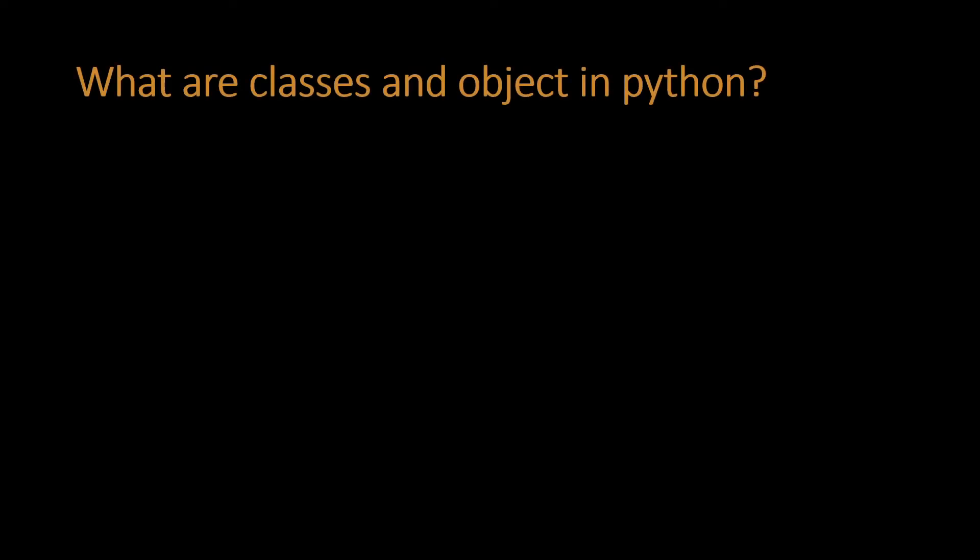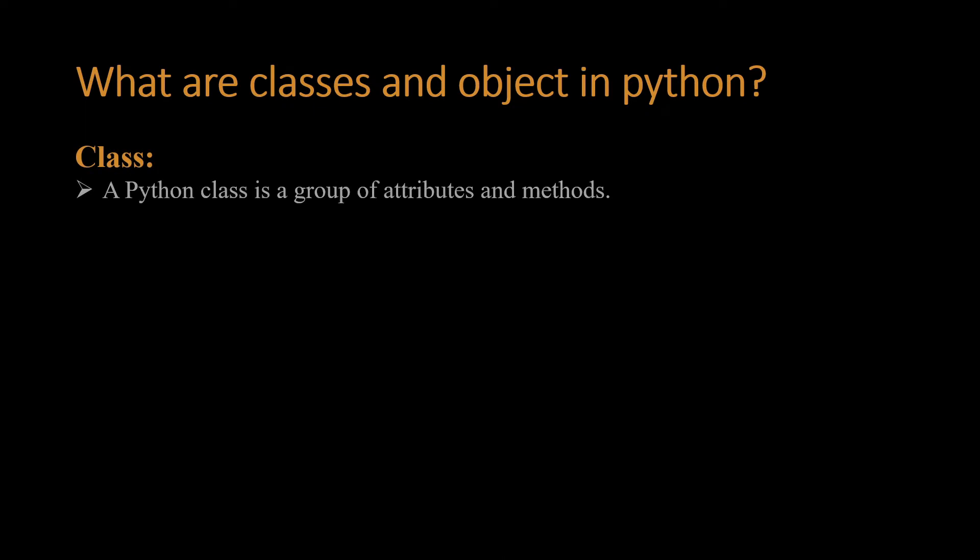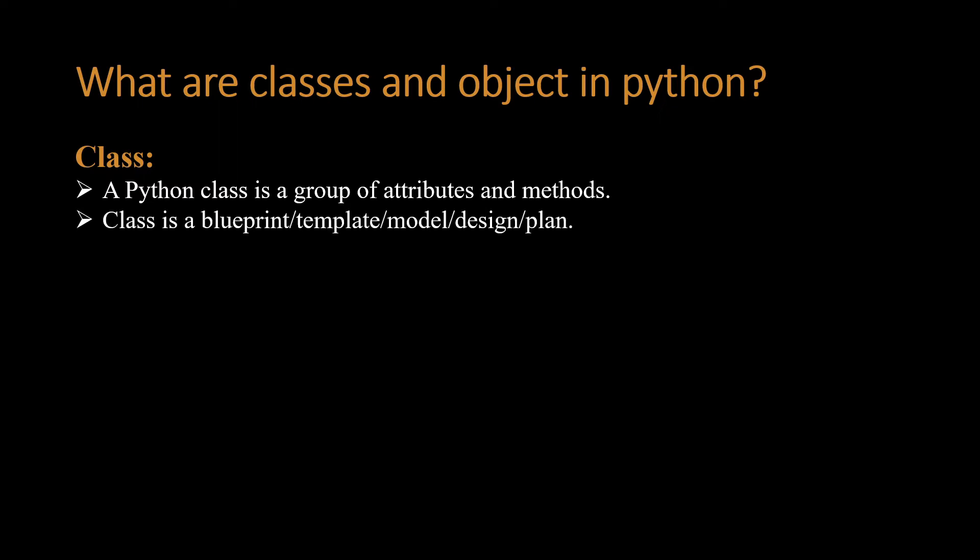Hi guys, today I'm going to discuss one of the most commonly asked interview questions: what are class and object in Python? A Python class is a group of attributes and methods. A class acts as a blueprint, template, model, or design plan. The class keyword is used to create a class.